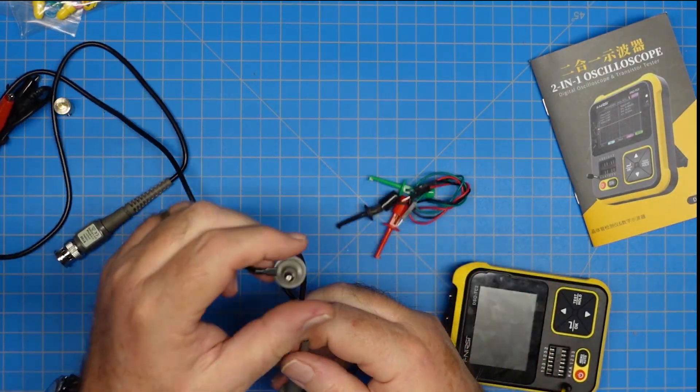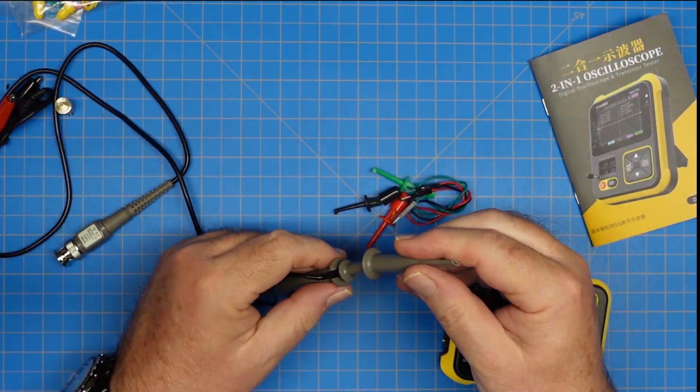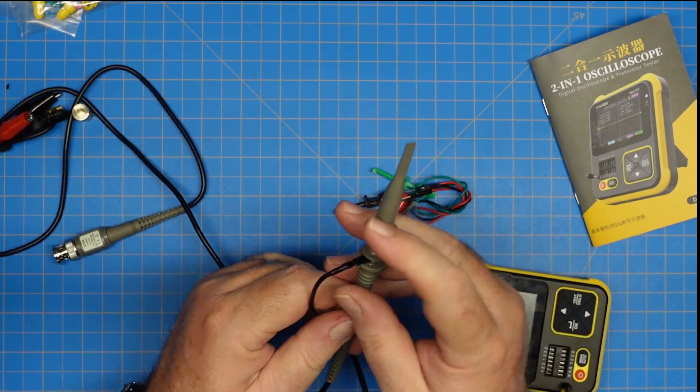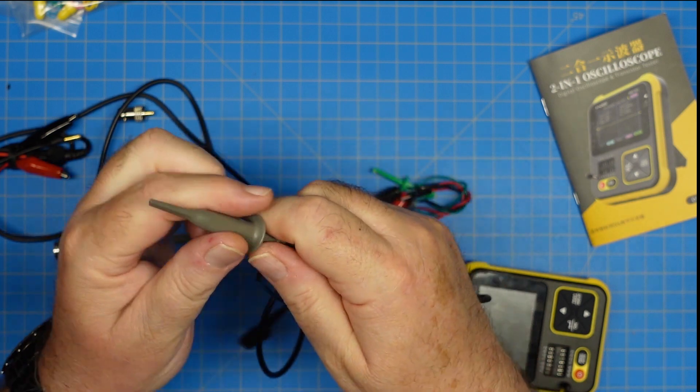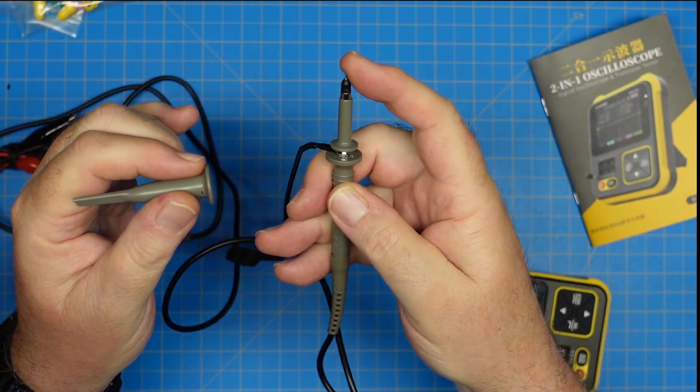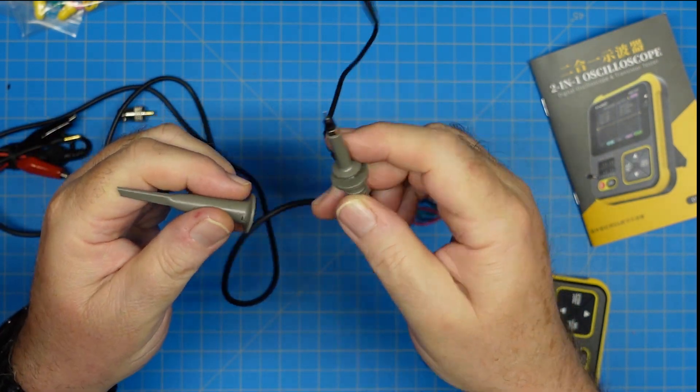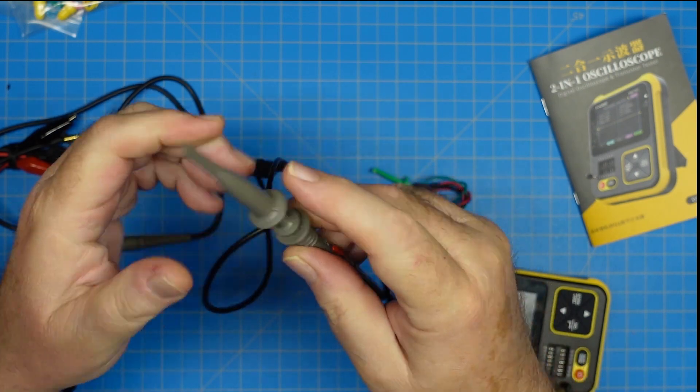And of course, we can pop that off, and we can use the pointy end, and then there's our ground clip for the scope function.